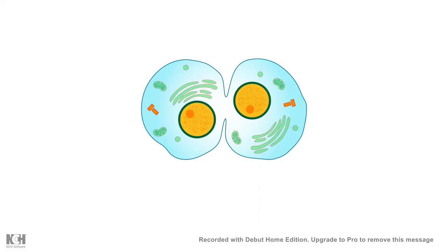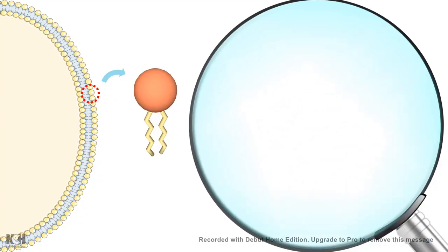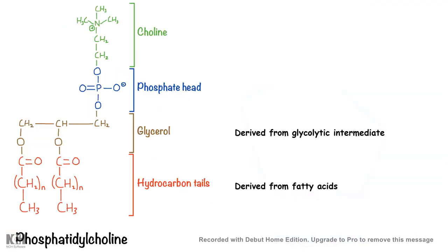Membrane lipid biosynthesis is a very important process for any cell's physiology. Think about a situation where the cell needs to grow in size — in that situation the cell needs extra membrane. The cell membrane is composed mostly of phospholipids. It has a hydrophobic tail and a hydrophilic head — more specifically, a polar group, a glycerol backbone, and two hydrophobic tails composed of fatty acids hanging from the glycerol backbone.